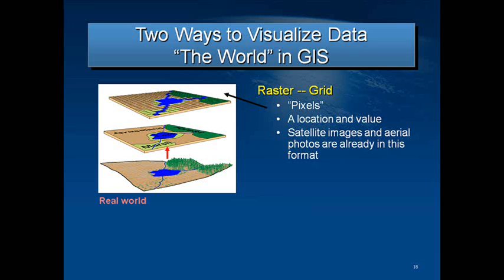Raster layers are organized in a grid of identically sized cells. This image is an example of a raster layer. The cells have a uniform length and width that are square shaped. These are called pixels. Each cell has its own individual attribute data.